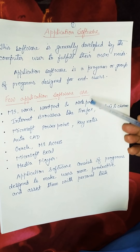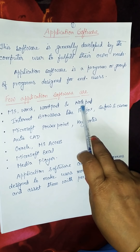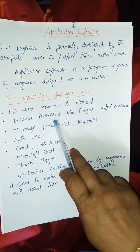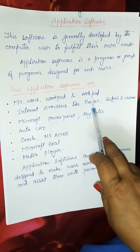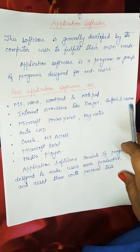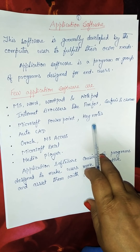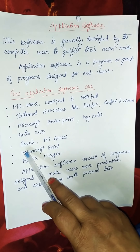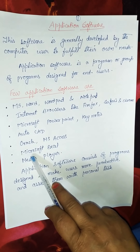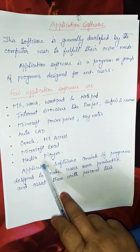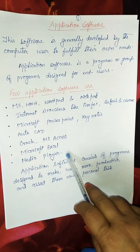A few examples of application software are MS Word, Wordpad, and Notepad. Second, internet browsers such as Firefox, Safari, and Chrome. Third, Microsoft PowerPoint and Keynote. Fourth, AutoCAD. Fifth, Oracle. Next, Microsoft Excel, and Media Player. These are examples of application software.